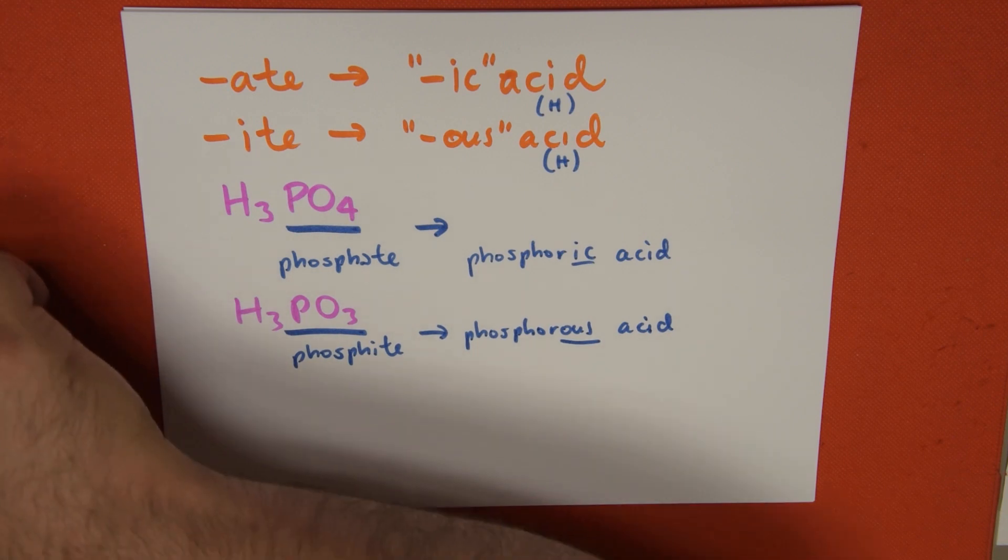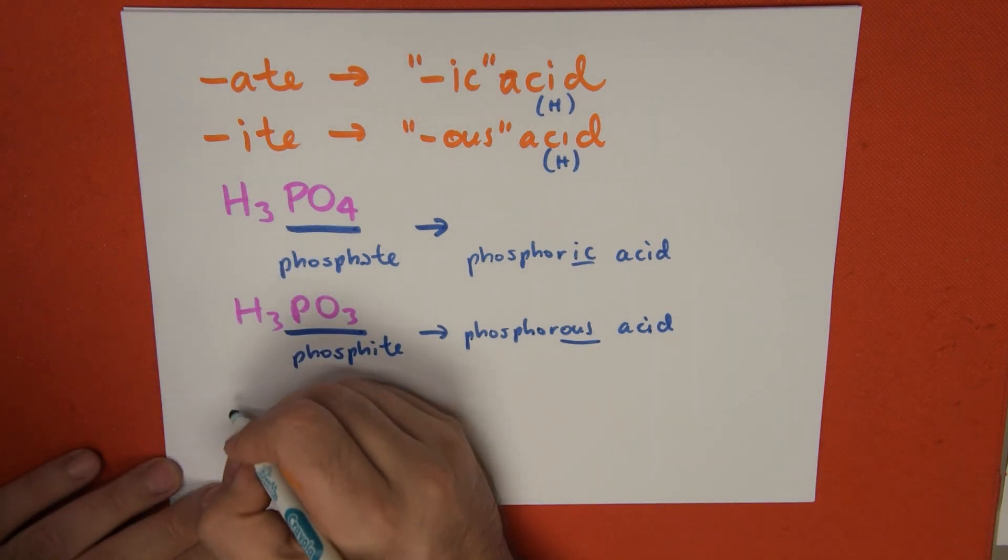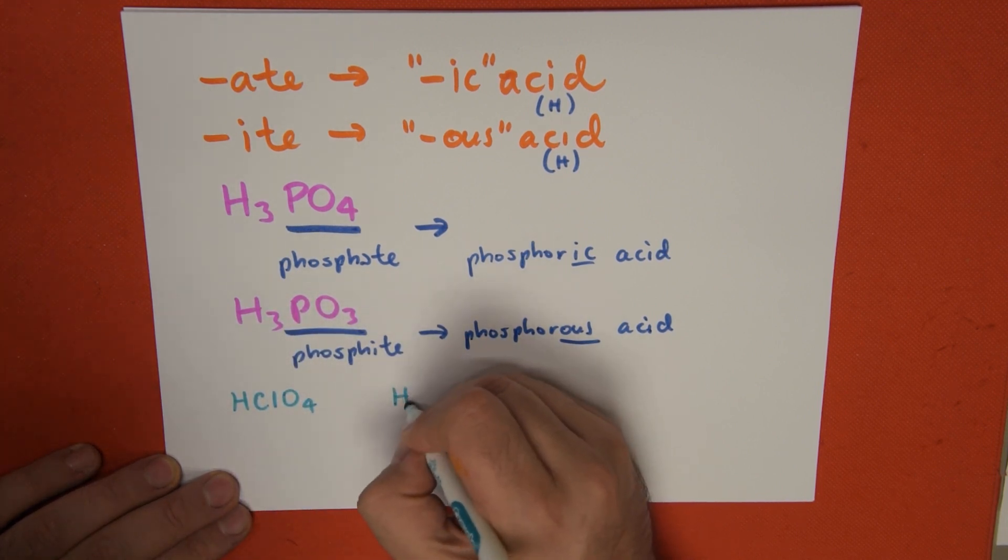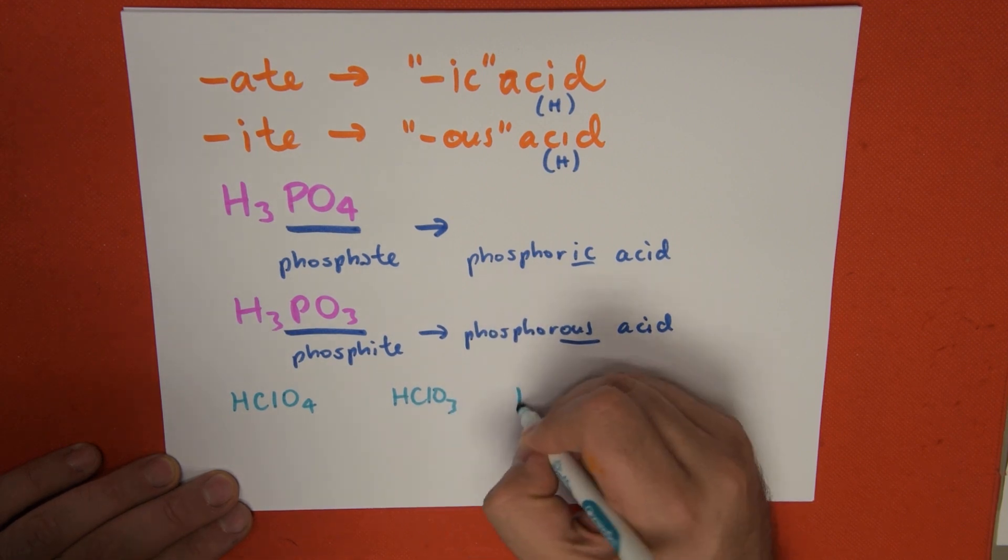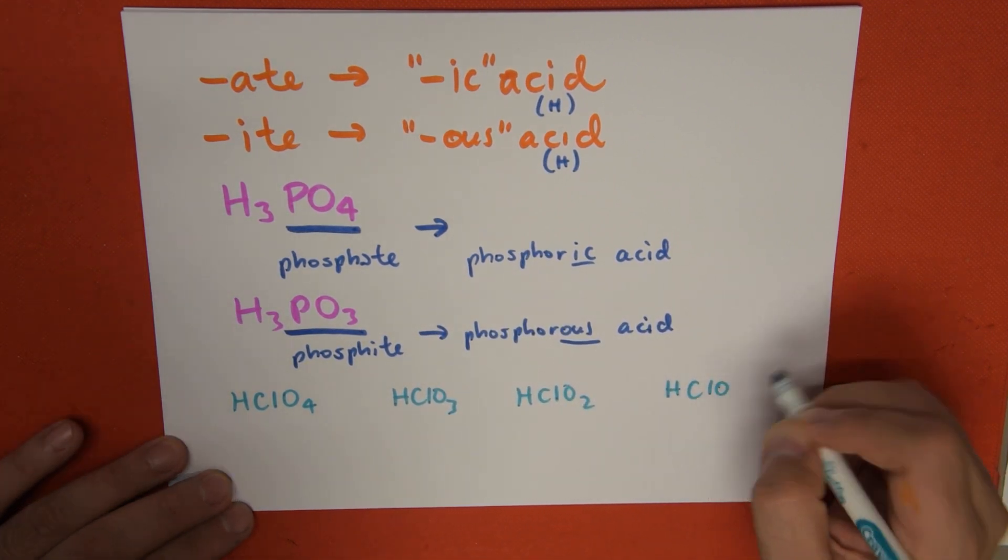We can do exactly the same thing with any other example. In this case, we might have HClO4, HClO3, HClO2, and HClO.